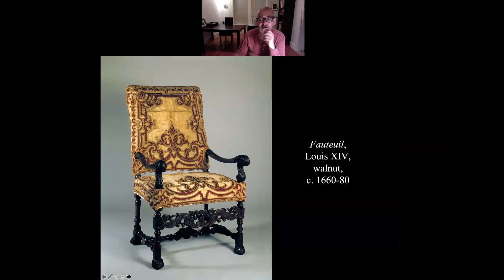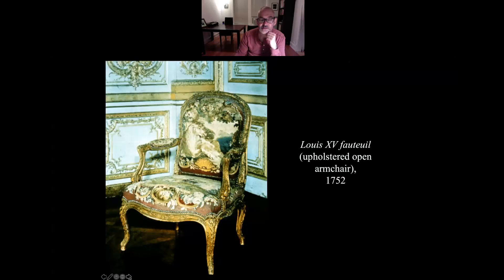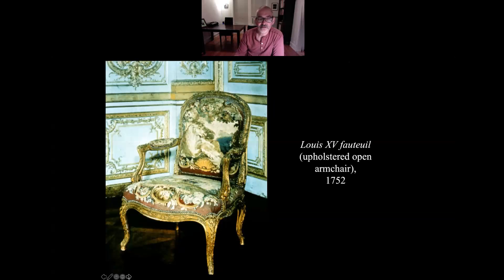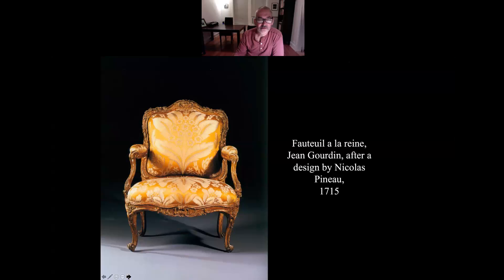Here is a Louis the 14th fauteuil, which is an armchair with an open area under the arm. There's also a type of upholstered armchair called a bergère where the section between the arm and the seat is a solid piece. Here are Louis the 15th and Louis the 14th examples — you start to get furniture named for these monarchs, each expressing a different style. Look at that beautiful upholstery on the royal fauteuil.